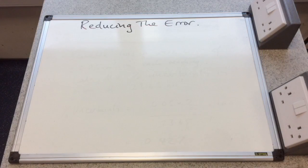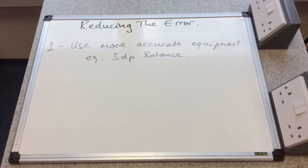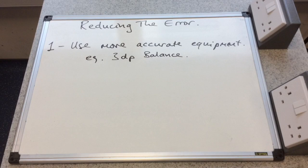So we'll finish off the video by looking at a couple of ways in which we can reduce the error. So the obvious thing to do is to use more accurate equipment. So for example, that 2DP balance I was using in the video, if I could afford to, I would use a 3DP balance, but we can't stretch to that. So we're stuck with the 2DP balance.